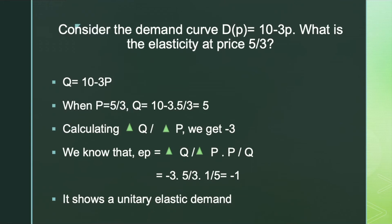We need to find ΔQ/ΔP by simple differentiation from the equation Q = 10 minus 3P. Differentiating Q with respect to P: the differential of 10 is 0 as it is constant, and differentiating minus 3P gives minus 3 × 1, so ΔQ/ΔP equals minus 3.